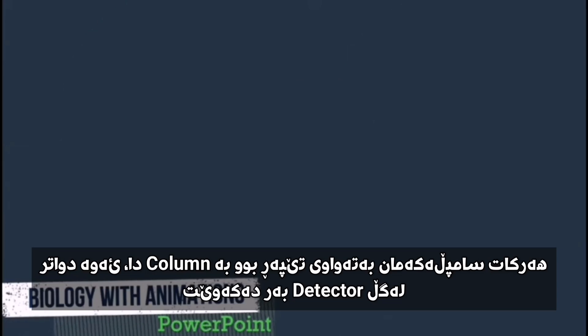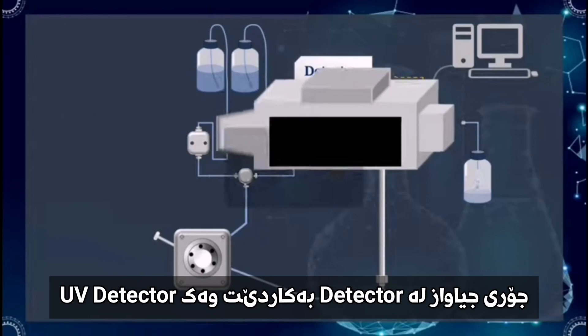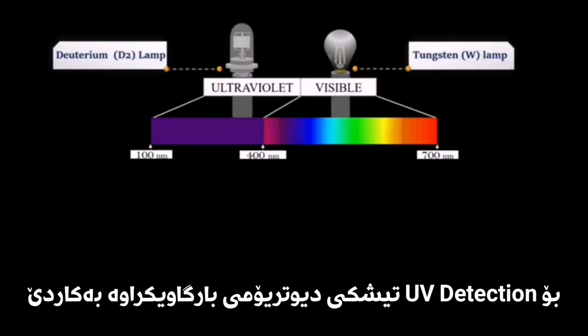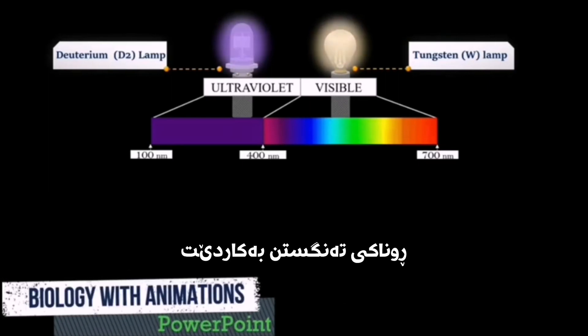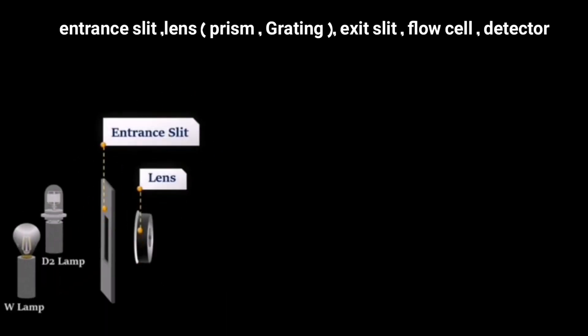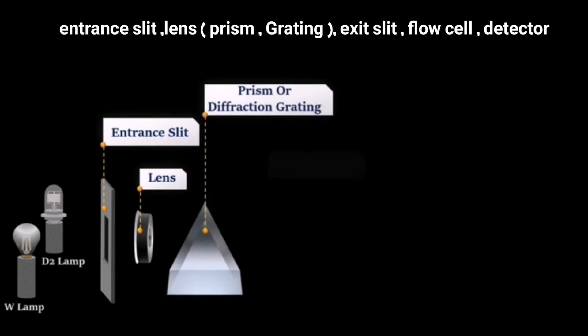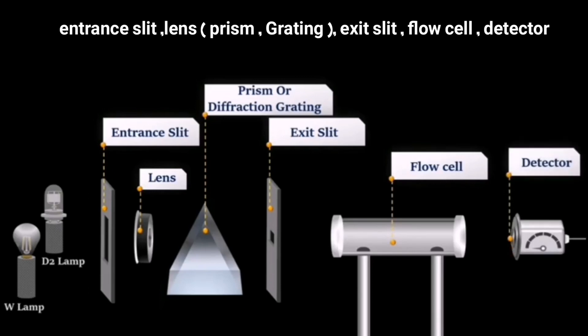As compounds elute from the column, they interact with the detector. Different types of detectors can be used, such as the UV-VIS detector, which shows an absorption spectrum in the ultraviolet or visible region. For the UV-VIS detector, a deuterium discharge lamp is used as a light source, and for component detection in the visible region, a tungsten lamp is used. In a UV-VIS detector we can also find an entrance slit, lens, prism or diffraction grating, exit slit, flow cell, and detector for absorption measurements.